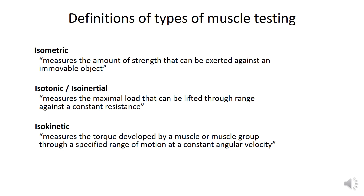Looking at the range of muscle strength testing methods, you can group them into three broad categories based on their characteristics. Firstly, we have the isometric methods where the muscles are tested against an immovable object, and therefore the muscle is in a relatively constant contraction length. Next, we have the isotonic testing methods where the tension within the muscle remains the same whilst the muscle length changes — this is what we usually call concentric and eccentric contractions. Lastly, there is the isokinetic testing methods where the speed of the movement is kept constant. This is usually difficult to perform manually and therefore requires machines to help us achieve that.